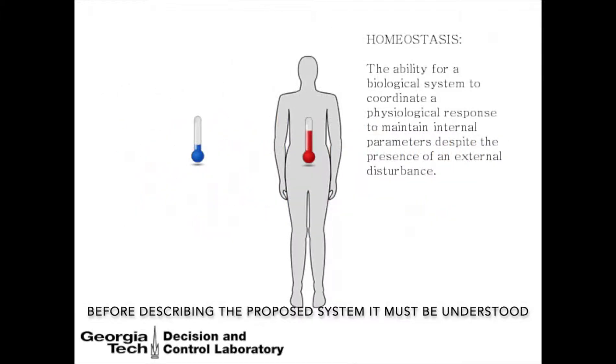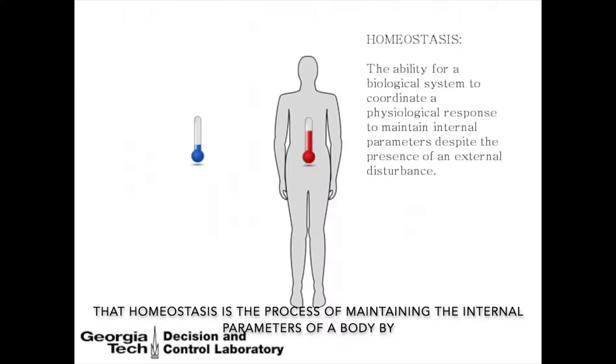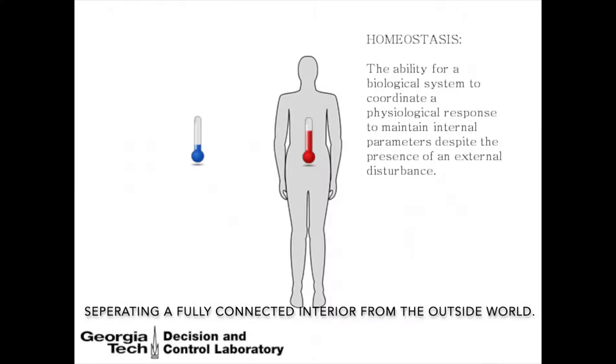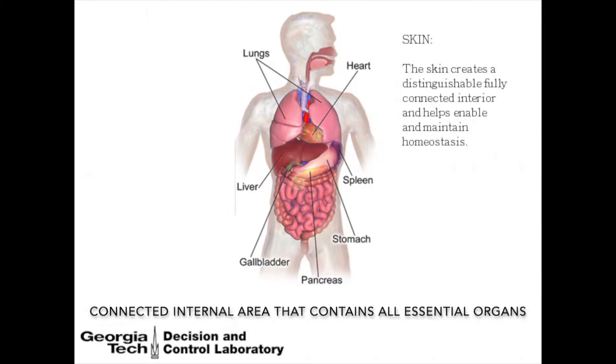Before describing the proposed system, it must be understood that homeostasis is the process of maintaining the internal parameters of a body by separating a fully connected interior from the outside world. An example of this is the human body, which uses skin to create a fully connected internal area that contains all essential organs, muscles, blood vessels, etc., all of which are connected together.